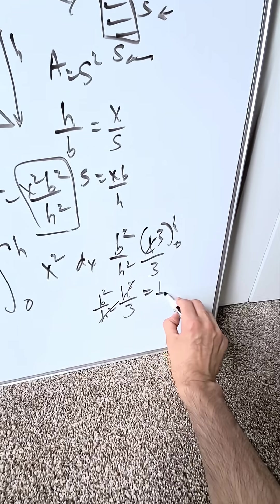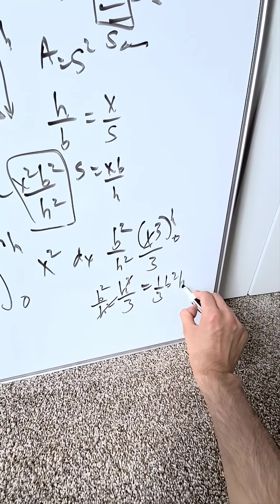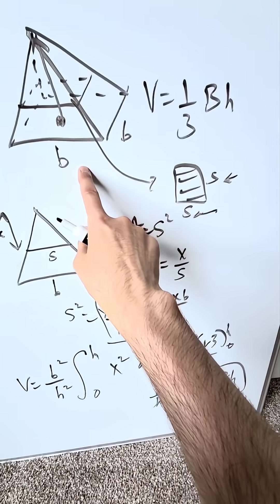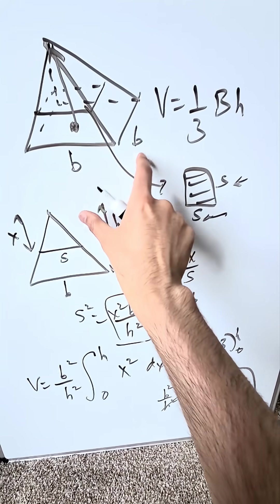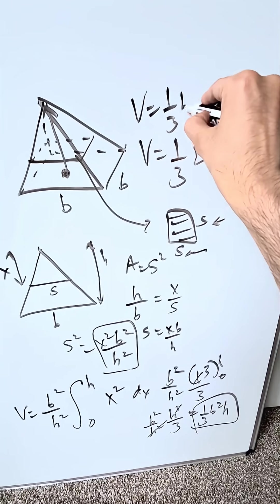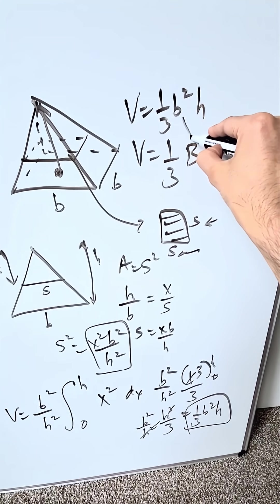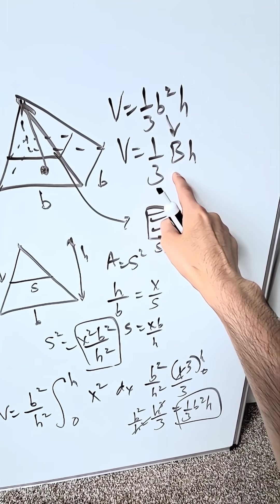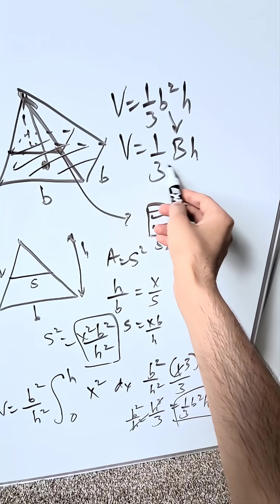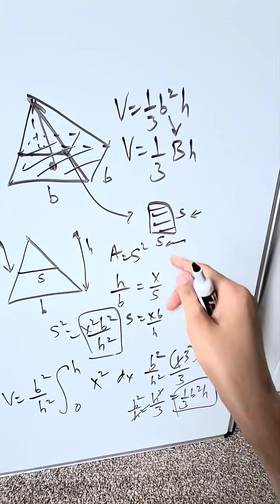Cancels out with that. You will have here one-third b squared h. This is not exact as this but it's correct because I'm looking here at a base with dimensions b and b. You multiply them you'll have b squared. This is equal to one-third b squared h, or the b squared represented by capital B to represent the base of this pyramid, square pyramid. And this right here, your formula has been derived.